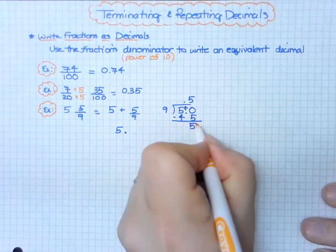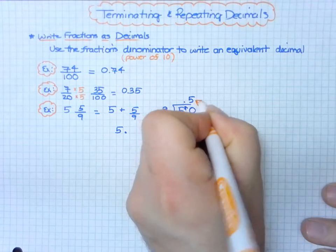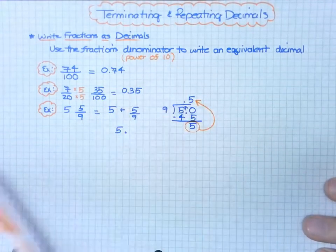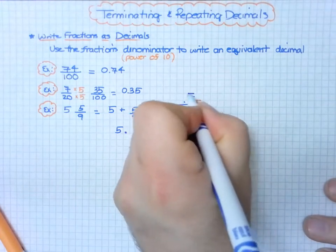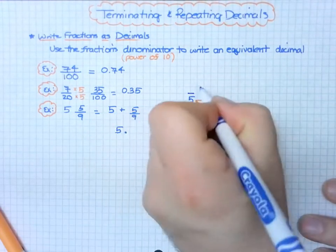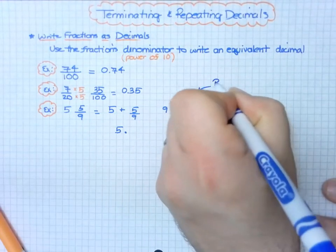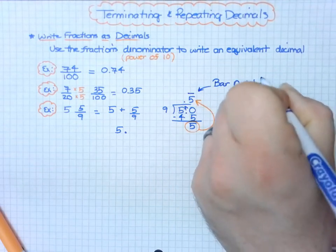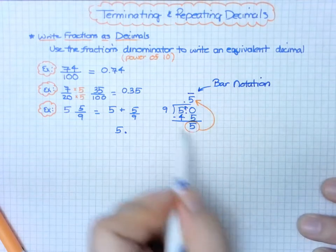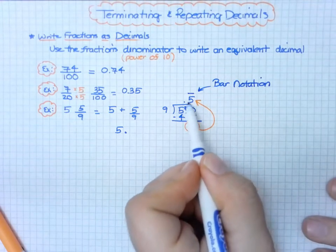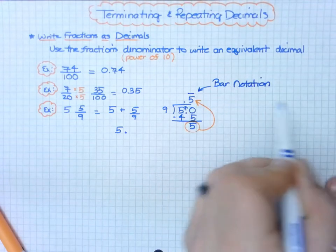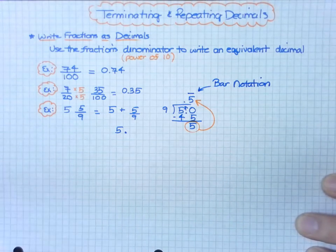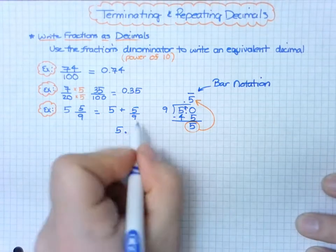When I see a number here that matches the number up here, I automatically know it's going to be a repeating decimal. Therefore, I put bar notation over top. You can keep going to prove this shows 0.5555... forever. Finally, we add that in here.